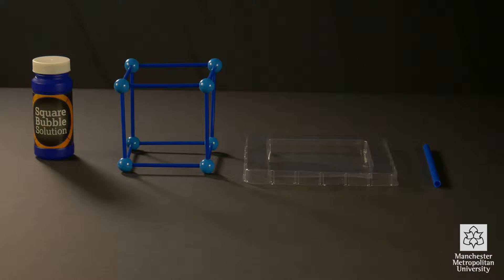To create a square bubble, here is what you will need: bubble solution, a square cube, a tray or container, and a straw.